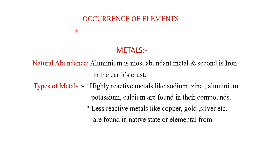Now let us see how these elements are found in nature — the occurrence of elements. First, let us take the example of metals. Regarding natural abundance, which means the amount of the substance in nature, aluminium is the most abundant metal and the second is iron. However, iron is produced in greater amounts compared to aluminium because it is easier to extract iron from its ore.